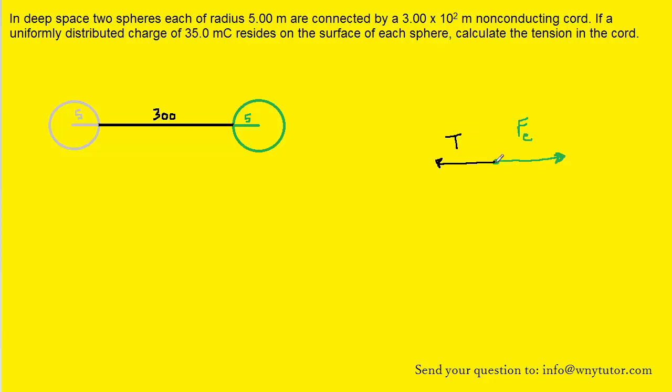Now again, because the green sphere is in an equilibrium state, we can set those two forces equal to each other. We can say that the tension force magnitude is equal to the electrostatic force magnitude.